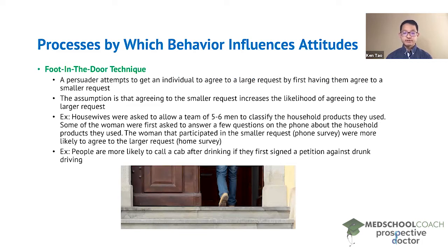This has been demonstrated in many studies. As one example, housewives were asked to allow a team of five to six men to enter their home to classify the household products that they used — this is the large request. Some of the women were first asked to answer a few questions on the phone about the household products they used — this is the smaller request.